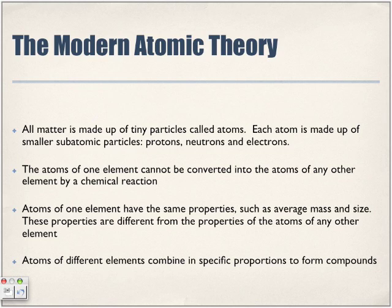Atoms of one element have the same properties, such as average mass and size. These properties are different from the properties of the atoms of any other element. We look at the mass number in terms of an average mass. The isotopes, yes, they change the mass number, but it's still within the average. The number of electrons that are circling around them all represent the same size.